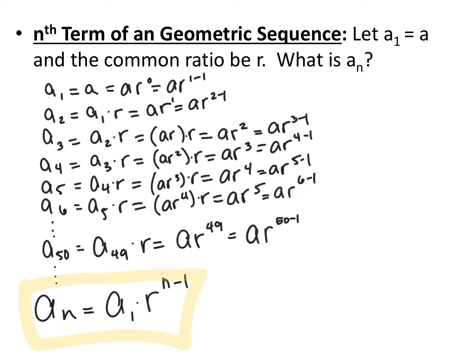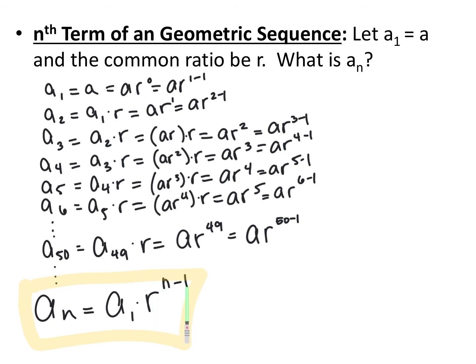So a₅ would be a times r to the fourth, and a₆ would be a times r to the fifth. The pattern shows it's always r to the power 1 less than whatever n is. So a₅₀ is a times r to the 49th power. Because repeated multiplication becomes an exponent, you're multiplying by 1 less than whatever the term number is. To get to the nth term, we take the first term and multiply it by our common ratio to the n minus 1 power — that's the nth term for a geometric sequence.